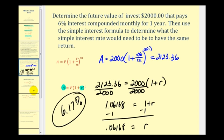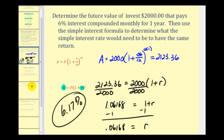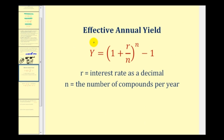Now let's take a look at the shortcut formula to determine effective annual yield. Here's the formula: Y equals the effective annual rate, R is the interest rate as a decimal, and N is the number of compounds per year.